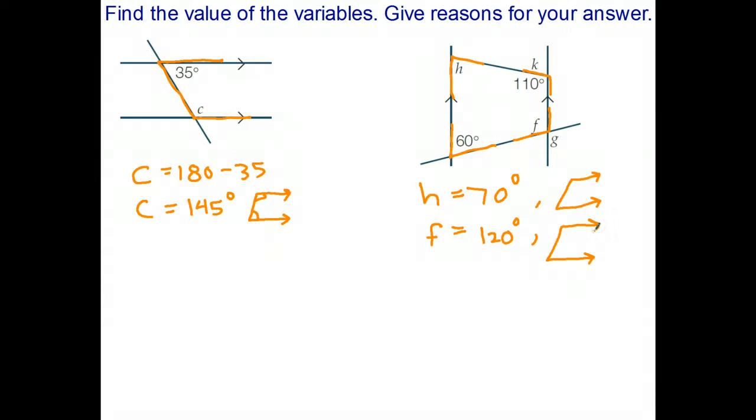Now F and G we know are equal, so therefore G is also 120 degrees, and that's using the fact that opposite angles are equal. And finally K and 110 make a straight angle, so K is going to be 180 minus 110. K is 70.